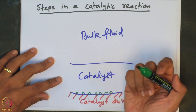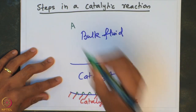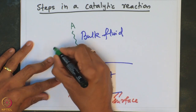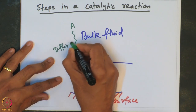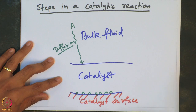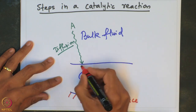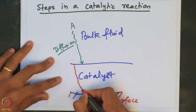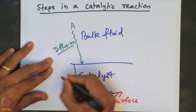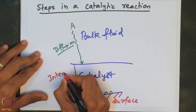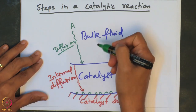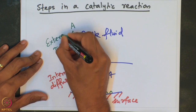The species which is present in the bulk fluid — let us say species A — has to first diffuse to the exterior surface of the catalyst. So there is a diffusion process where the species has to diffuse to the exterior surface of the catalyst. Following which, the species has to undergo internal diffusion, where it diffuses to the active surface or active sites. One may term the diffusion in the bulk fluid as external diffusion.